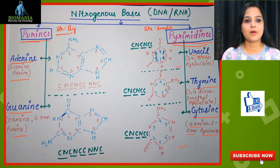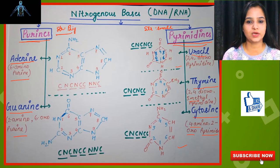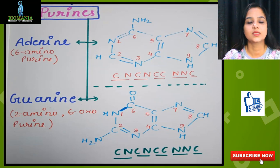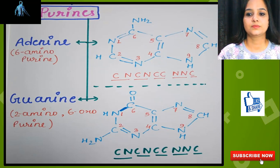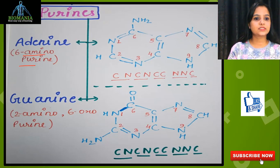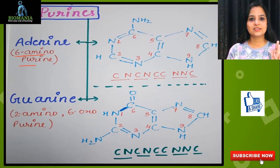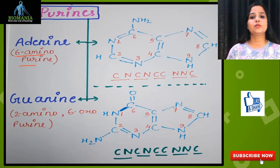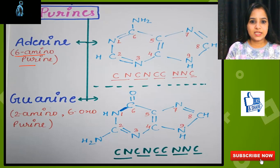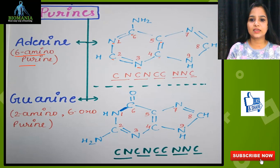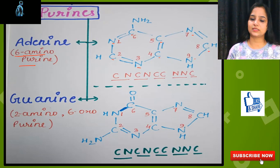Let's study the structure of purines first, then pyrimidines. Adenine is a 6-aminopurine, meaning there is an amino group on the 6th carbon. Now, using the line C-N-C-N-C-C-N-N-C: start with C, then N, C, N, then C, C, then N, N, and finally C. That gives you the main frame of the purine ring system.